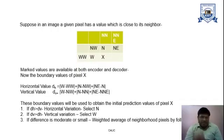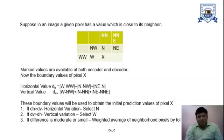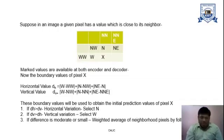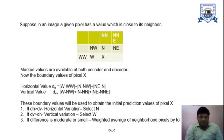When we calculate the vertical value DV, we start from the neighbours of X: the absolute value of (W minus NW) plus (N minus NN) plus (NE minus NNE). We calculate the absolute value of all those and take the summation for the vertical value DV.